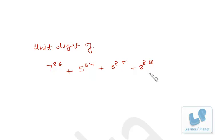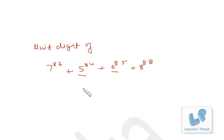Now you must know that any power of 5 will end in 5 only, and any power of 6 will end in 6 only. So that's 5 and that's 6 — that is confirmed.